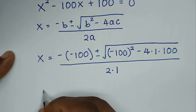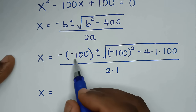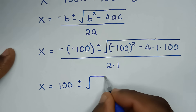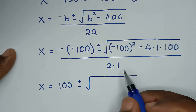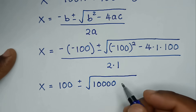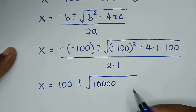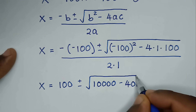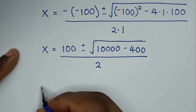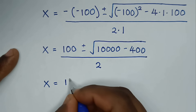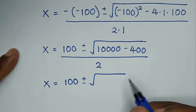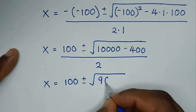In the next step, x is equal to negative negative 100, which is positive 100, plus or minus square root of negative 100 squared — which is positive 100 squared, that is 10,000 — minus 4 times 100, which is minus 400, over 2 times 1, which is 2. So x is equal to 100 plus or minus square root of 10,000 minus 400, which is 9,600, over 2.